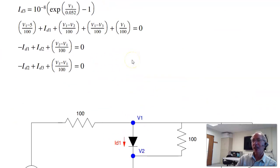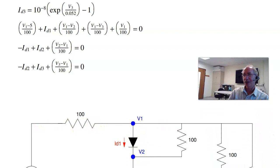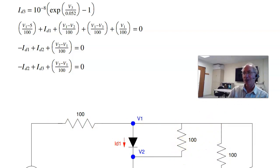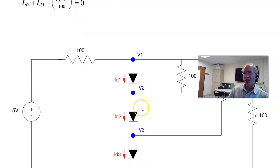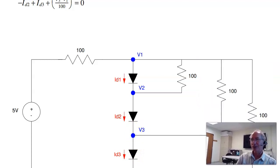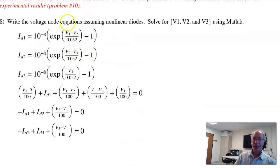Now write the node equations. At node 1, there it is, at the top, I get the current left, V1 minus 5 over 100, plus ID 1, plus V1 minus V2 over 100, plus V1 minus V3 over 100, plus V1 over 100, equals 0. Diode 2. Minus ID 1, plus ID 2, plus V2 minus V1 over 100, equals 0. Again, don't sweat it that I've got current going backwards through a diode. Actually, it's going down, so that'll be minus ID 1. I'm summing the current from the node. Diode 3, I get minus ID 2, plus ID 3, plus V3 minus V1 over 100, equals 0. So, 4 equations, 4 unknowns. Actually, 6 equations, 6 unknowns. Solve.